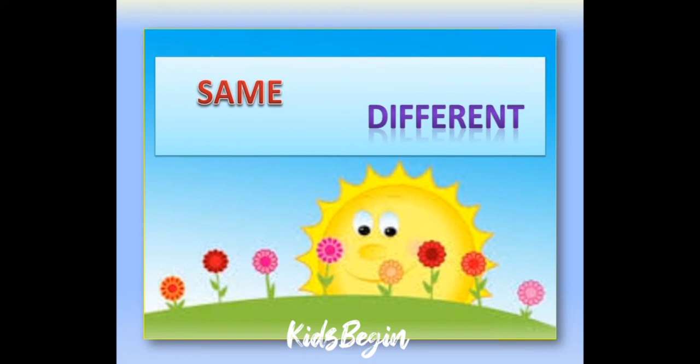Children, do you know what are same? The things that are same in size, same in shape, same in color and same in number are same. And what are different? The things that are not same in size, not same in shape, not same in color and not same in number are different.